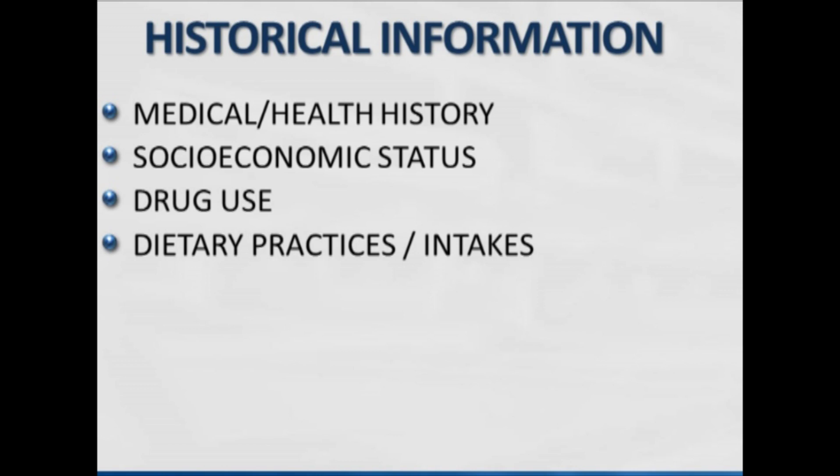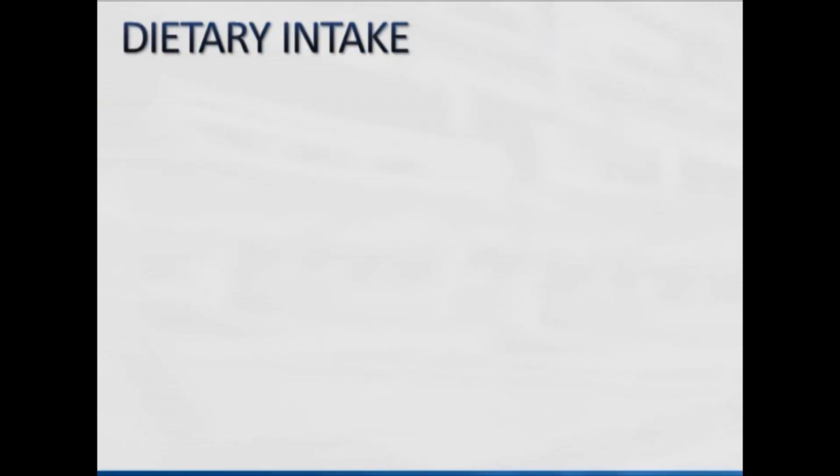You'd want to know, for example, how often an obese person has used weight-reducing diets and to what extent they've restricted their diets. Drug use covers both prescription and non-prescription drugs. Socioeconomic status refers to their ability to use financial resources to sustain a healthy, well-balanced lifestyle. And of course the medical history is very important in terms of understanding whether there's been a history of heart disease, diabetes, or gastrointestinal disease.